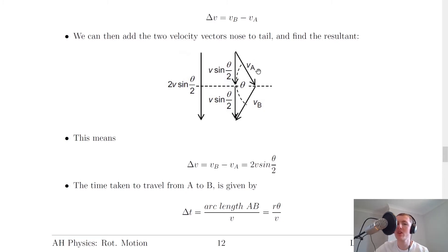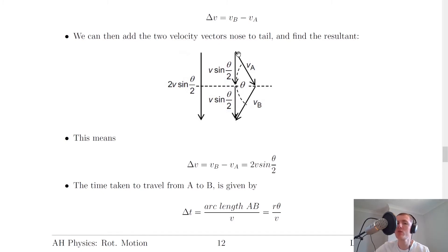For now we're going to ignore the subscripts and call it velocity V. Doing the same on the other side, sine theta over two equals opposite over hypotenuse, giving us V sine theta over two again. So the total length of this resultant vector is V sine theta over two added to V sine theta over two, which gives us a total of 2V sine theta over two.